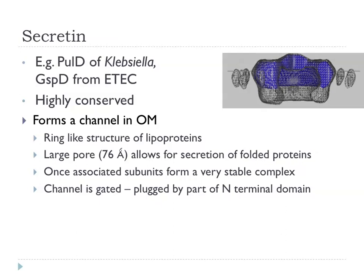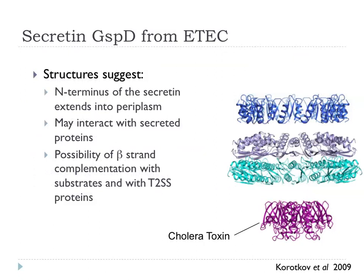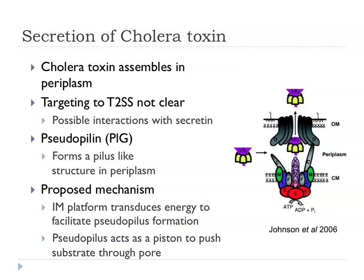There is a gating mechanism — an N-terminal domain that swings round and closes the passageway until a protein that is going to go through is ready to be engaged, with some signal transduction allowing this to happen. That N-terminus interacts with secreted proteins; here for example cholera toxin comes in, with interactions involving beta strands — particularly with proteins that already have beta strands — and this crosstalk between the secretin and the secreted proteins. Cholera toxin and LT assemble in the periplasm and are targeted to the secretion system possibly through interactions with the secretin.